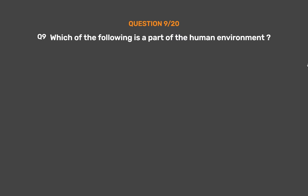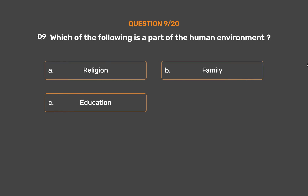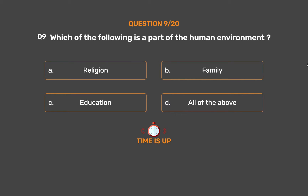Question No. 9. Which of the following is a part of the human environment? Option A: Religion. Option B: Family. Option C: Education. Option D: All of the above. The correct answer is Option D: All of the above.